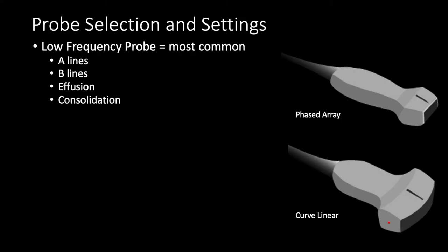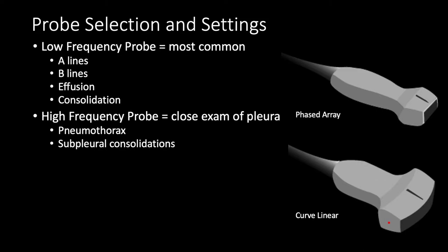Now let's talk about setting up our machine. First we have to select the right probe. You want to start with a low frequency probe most commonly — either the phased array, which fits nicely between the ribs, or a curved linear probe, which has a wider footprint so you'll get a little more rib shadowing but can see multiple lung spaces. We use these low frequency probes when looking for A-lines, B-lines, effusions, and consolidations. Sometimes we do want a high frequency probe when examining the pleura, specifically for pneumothorax or subpleural consolidations, but for now let's stick with our low frequency probe.